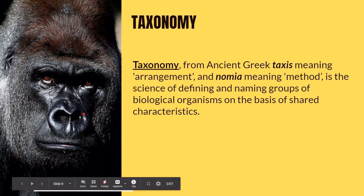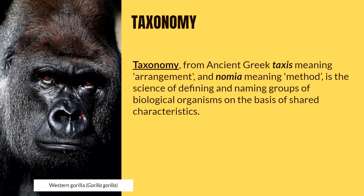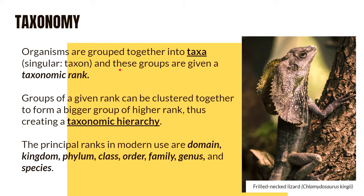This is an image of a western gorilla with the scientific name Gorilla gorilla. In taxonomy, organisms are grouped together into taxa — plural; singular taxon — and these groups are given taxonomic rank. Organisms with similar structures are grouped together into a taxon, and as these groups become bigger they can be clustered to form a bigger group of higher rank, eventually creating a taxonomic hierarchy.